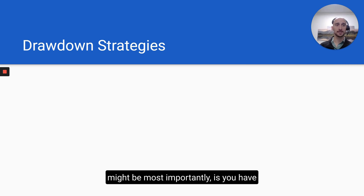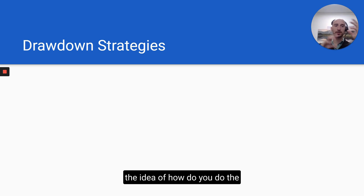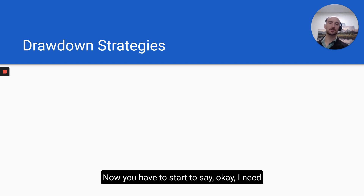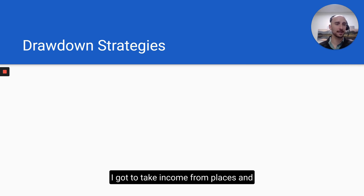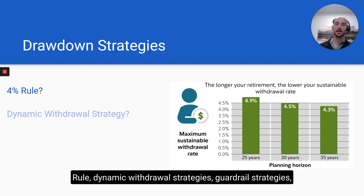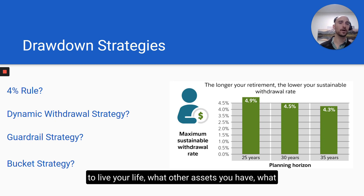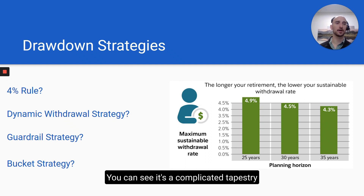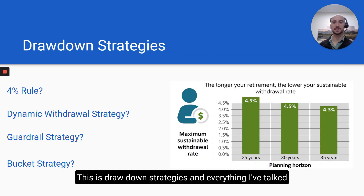Finally — and this may be most important — you have to have a drawdown strategy. Once you understand asset location, asset allocation, and have made decisions around Medicare and Social Security, you have to close the gap between spending and income by drawing down assets. There are many different strategies and no one-size-fits-all approach. You have things like the 4% rule, dynamic withdrawal strategies, guardrail strategies, and bucket strategies, among others. It all depends on how you want to live your life, what other assets you have, your Social Security income, and your Medicare premiums. You might also choose different strategies at different times during retirement.